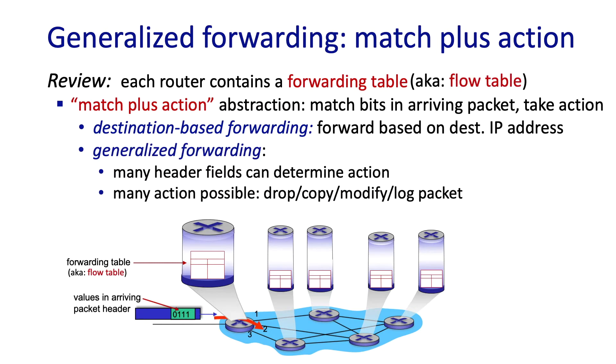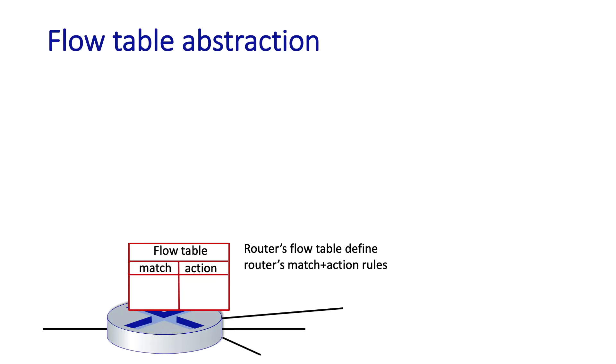Well, generalized forwarding generalizes this behavior in two ways. First, the match can be performed on many different header fields in the arriving packet: the link layer frame header, the network layer datagram header, or the transport layer segment header. And secondly, the action space is going to be much broader than just forwarding as we'll see.